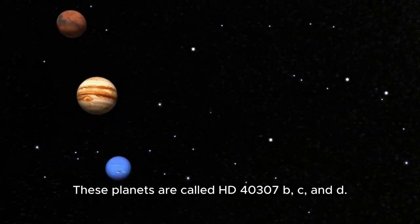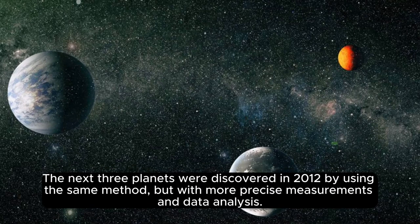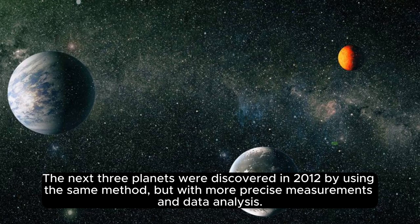These planets are called HD 40307 B, C, and D. The next three planets were discovered in 2012 by using the same method, but with more precise measurements and data analysis.